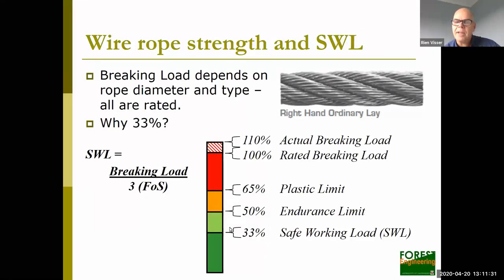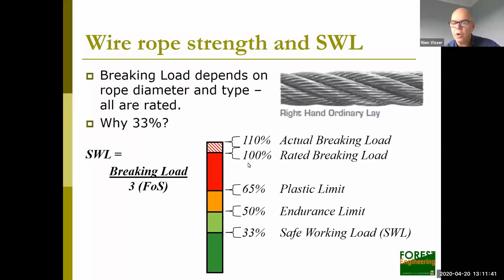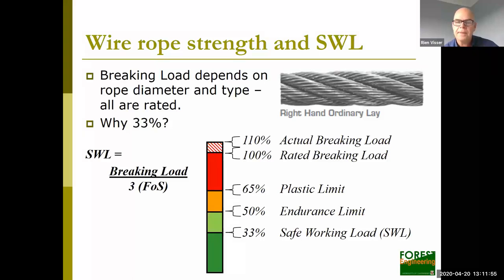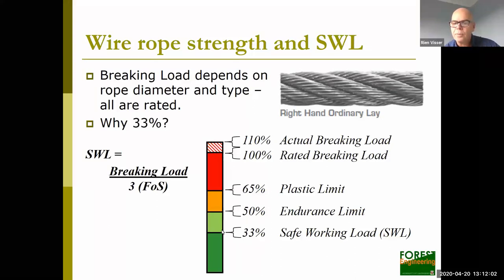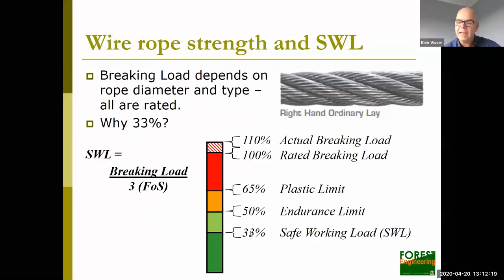The endurance limit is about 50% of the rope strength. If we never exceed that level of loading, the rope would last almost forever. For a 10-ton rope, if loading always stays below 5 ton, we would never break that rope. However, in most harvesting and logging operations there's a lot of shock loading — that's why we use 33% as our safe working load. We design for that, accepting that we might occasionally go slightly over, but we must stay away from the orange or red zone. We are required by law to try to keep forces below 33%.